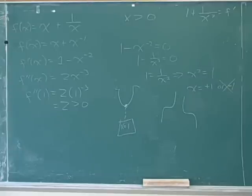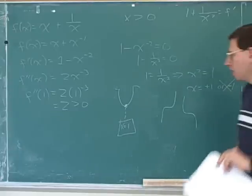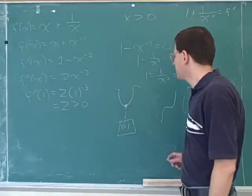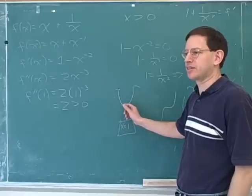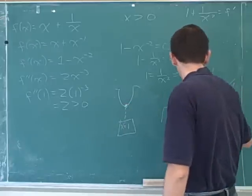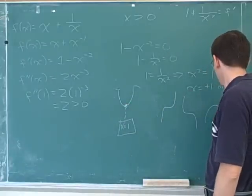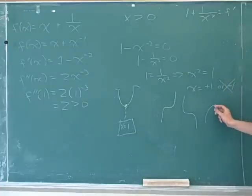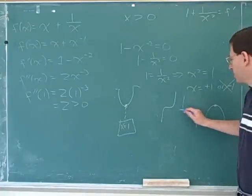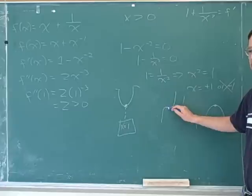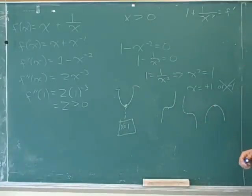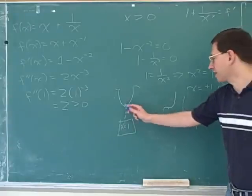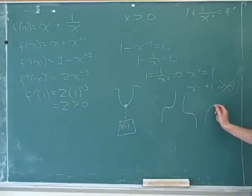How do you use the second derivative test? The first derivative test just tells us that the slope is zero when x is equal to one, but that doesn't mean it's a minimum. It could be a maximum, or it could even be something weird like a saddle point. So all we know when we found the critical point was that the graph could look like several different shapes.